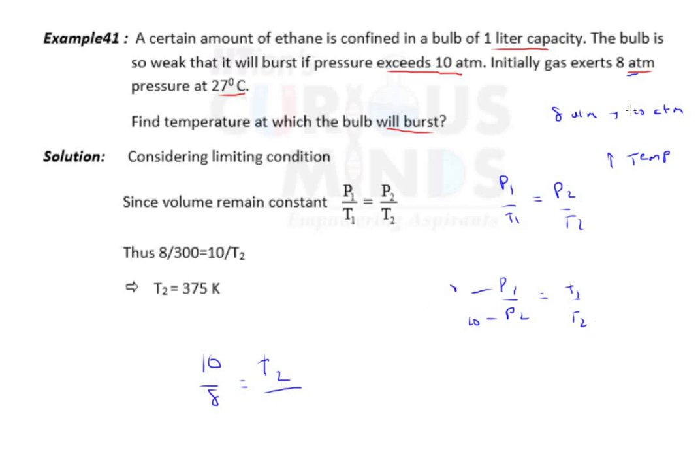What is T1? Initial 27 degrees Celsius. But this temperature should be in Kelvin. So it is 300 Kelvin. So T2 will be nothing but 10 upon 8 times 300.